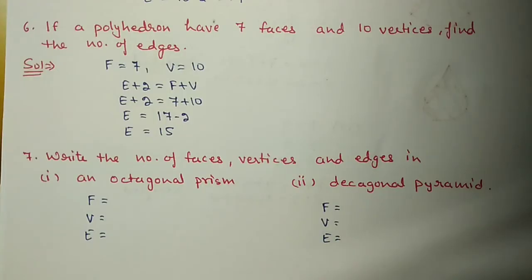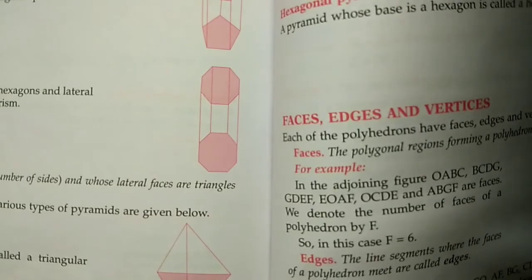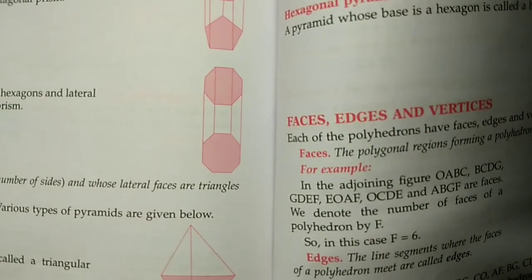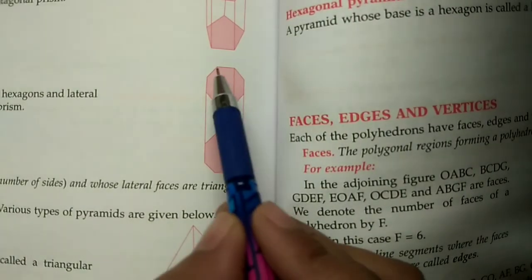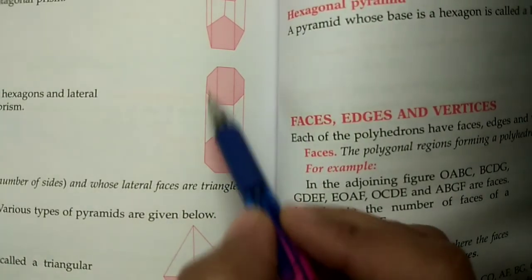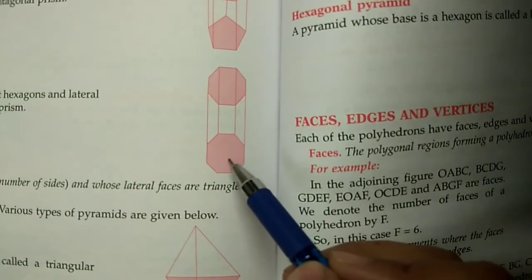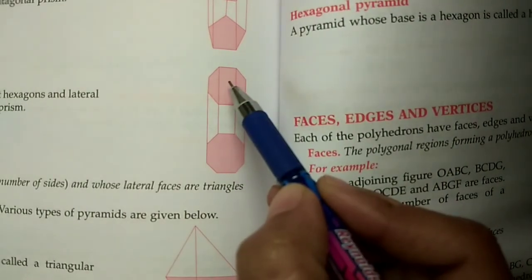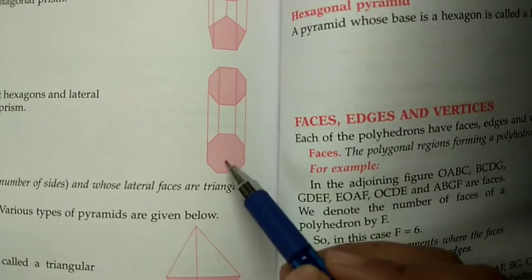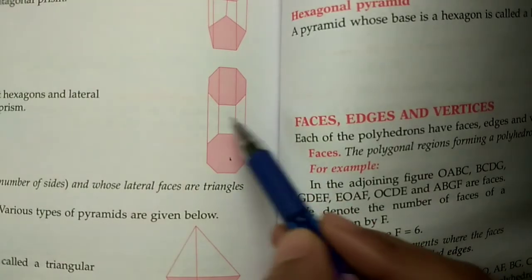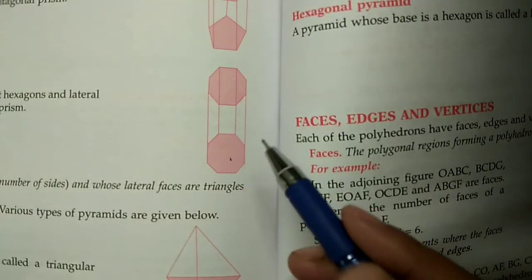Question number 7: Write the number of faces, vertices and edges in an octagonal prism. You can see the figure in your book on page number 282. This is an octagonal prism where the base is an octagon and the top is also an octagon, and there are rectangular faces connecting them.